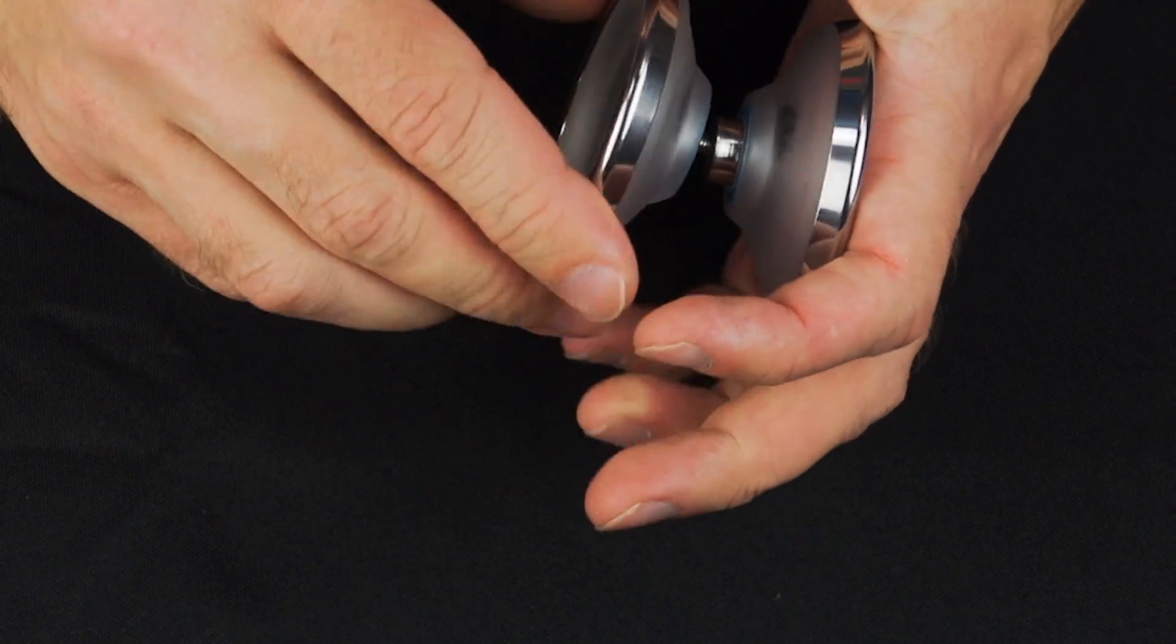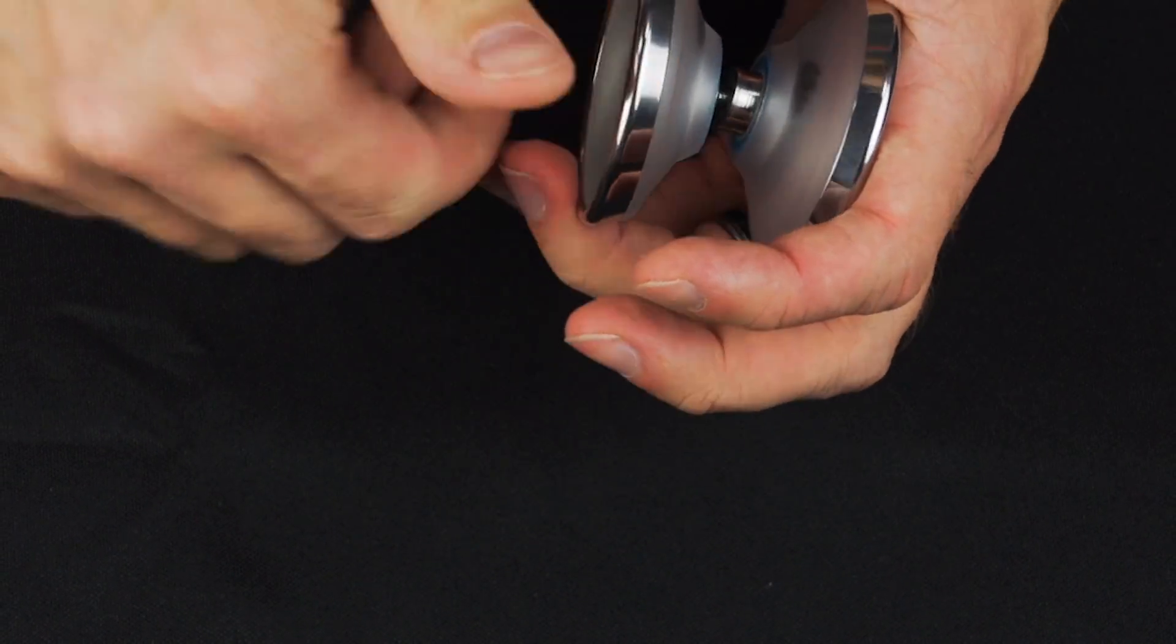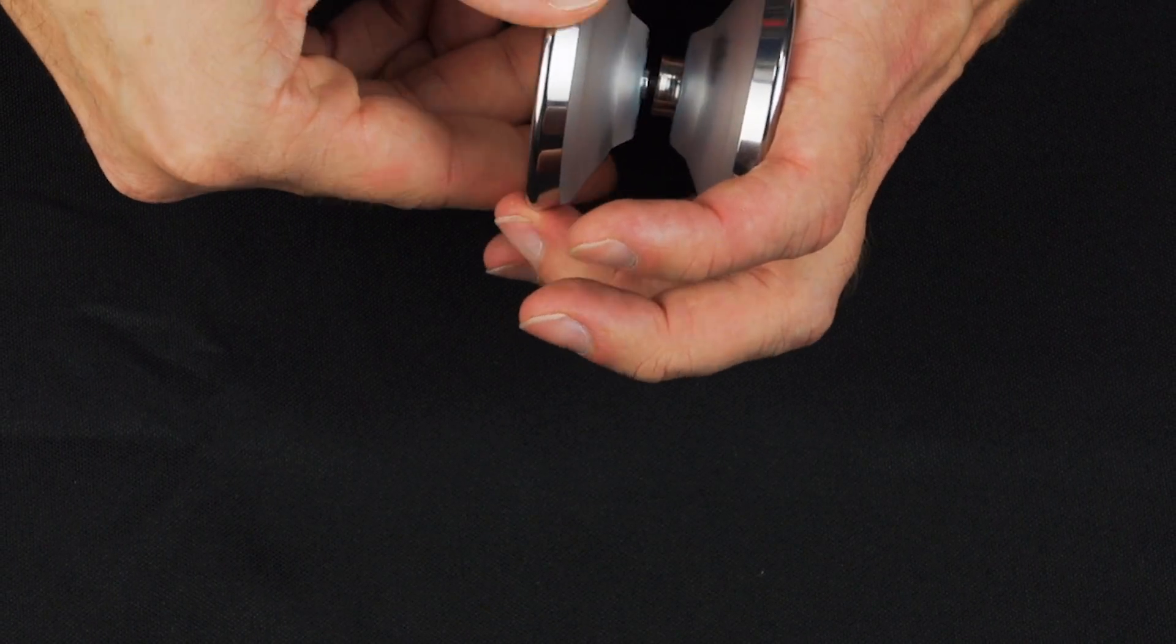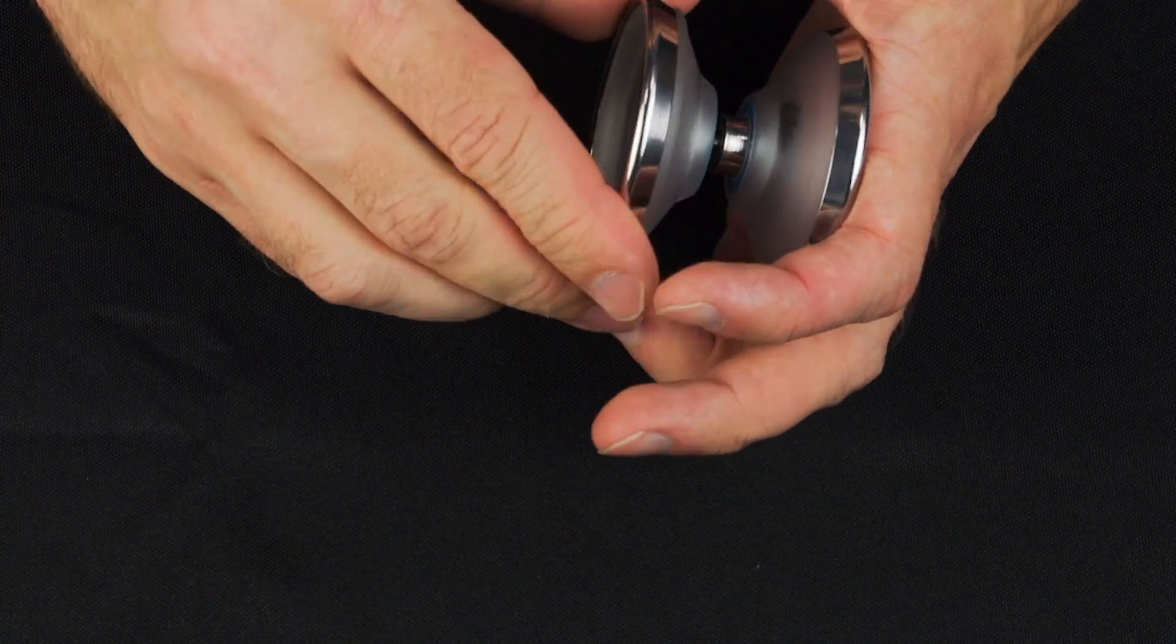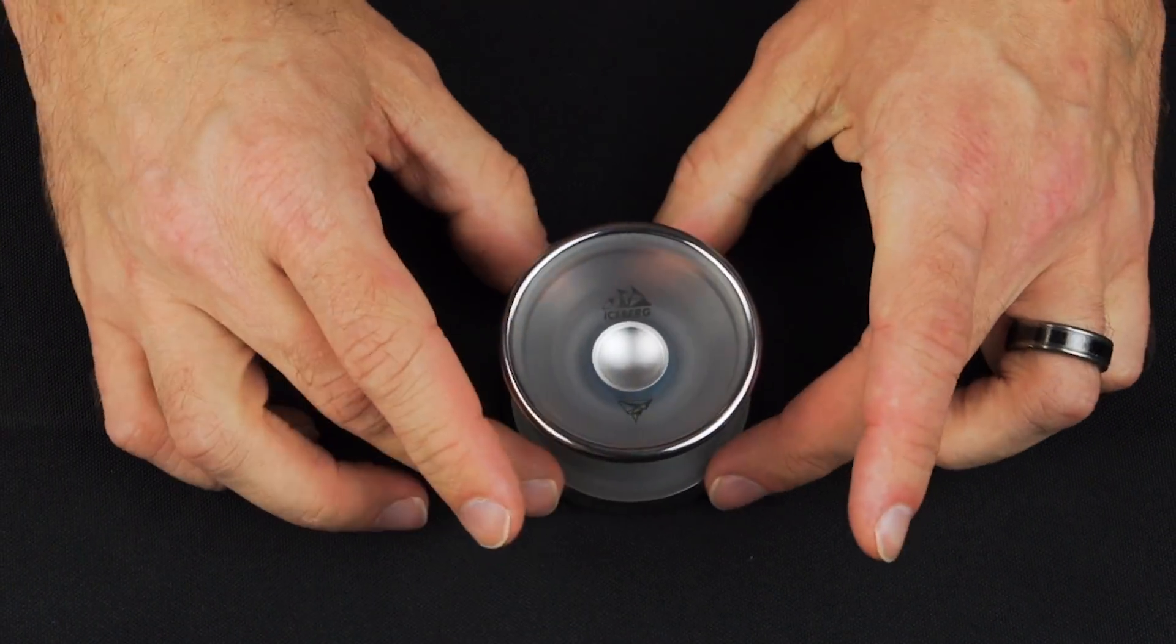Now I think another thing that you might be wondering about is, is it going to be as durable? Is it going to hold up to drops and things like that, as well as an aluminum yoyo? One of the ways that we test that with yoyos is we just give it to Jake, and we have him do a bunch of crazy 5A tricks.